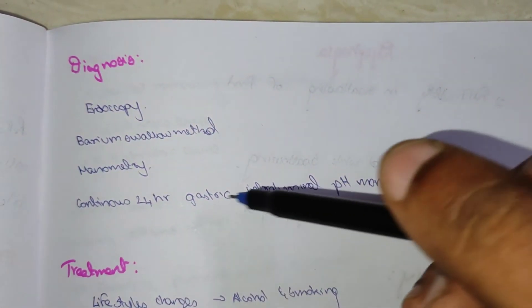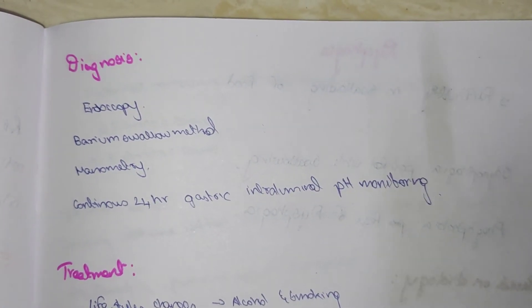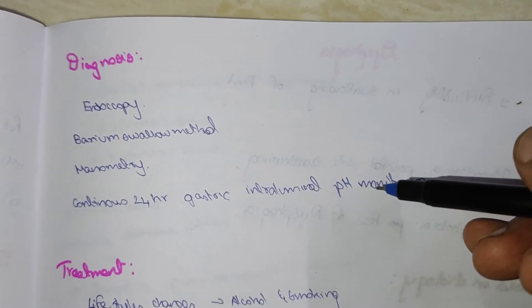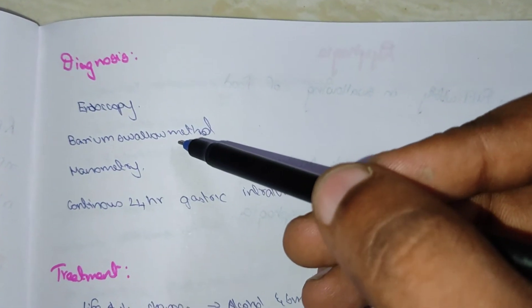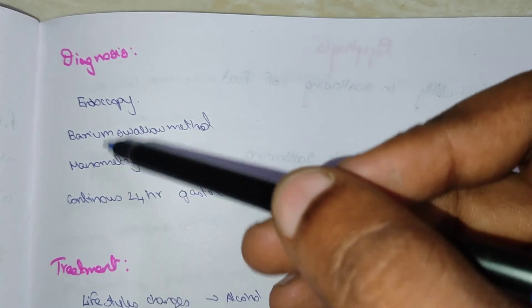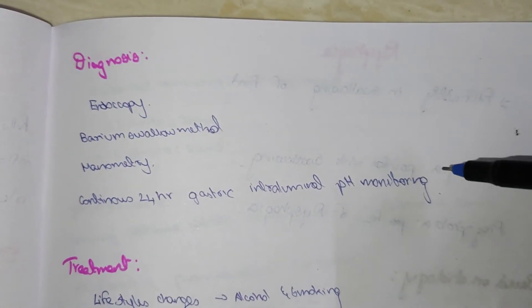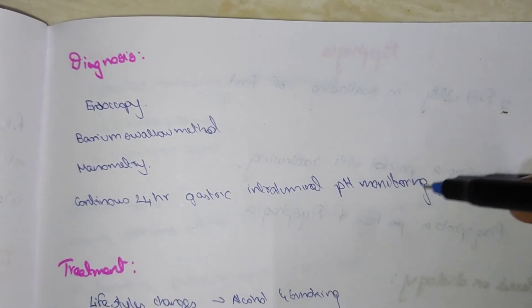Which is continuous 24-hour gastric intraluminal pH monitoring, manometry, barium swallowing method, and endoscopy. These are also diagnosis methods, but the most important method is this intraluminal pH monitoring.